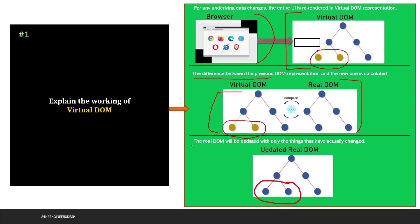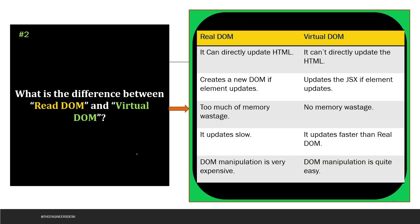In the third step, the real DOM is updated with only the things that have actually changed. So only those specific updated nodes are added to the real DOM, resulting in the updated DOM. This is how the virtual DOM works in React.